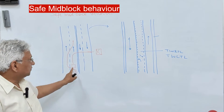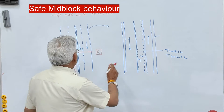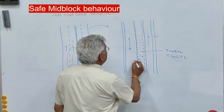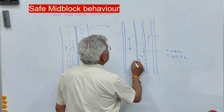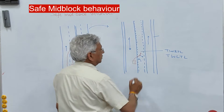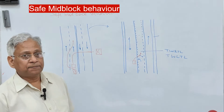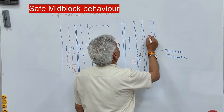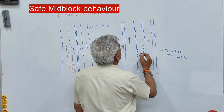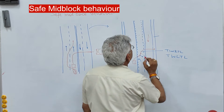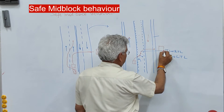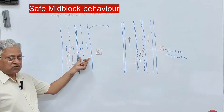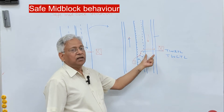Now the same thing can be accomplished without delaying traffic. Whenever a right-turning vehicle needs to make a right turn, it moves to the two-way right turn lane, and then whenever a suitable gap occurs, it crosses to reach the establishment. So here a right-turning vehicle needs to cross only one lane instead of two.